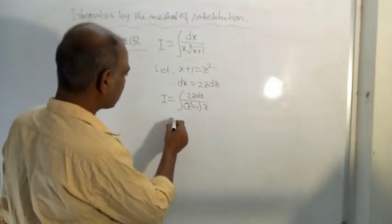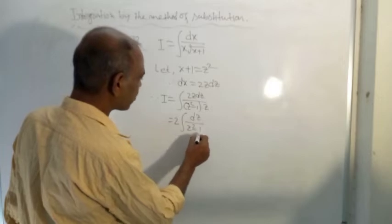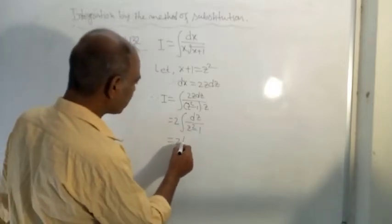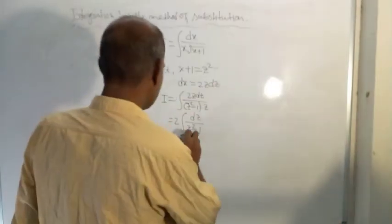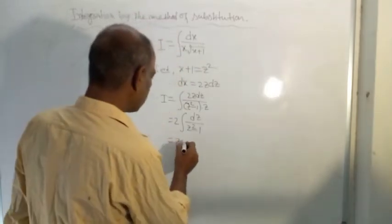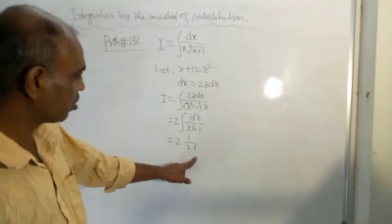The remaining is 2 times integration of dz divided by z squared minus 1, which is known to you.